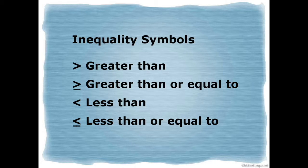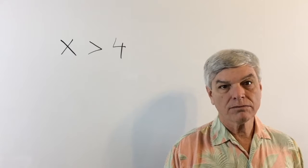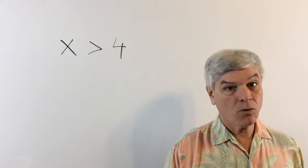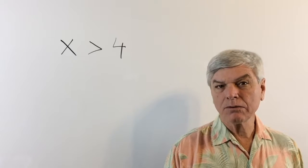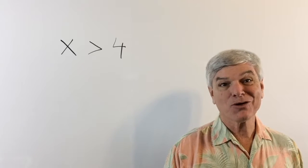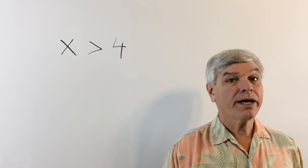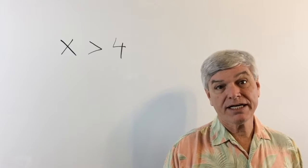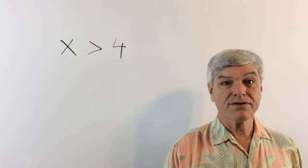This is how you read those symbols if you're reading left to right, which means your variable needs to be on the left to make sense of this. So the way you would read this is: x is greater than 4. It can't be 4. It can be 4.1, 4.001 — as long as it's greater than 4. It can be 5, 6, 7, 8, on to infinity. But it can't be 4 and it can't be less than 4.